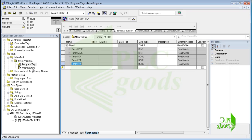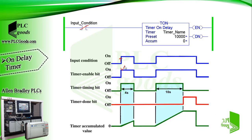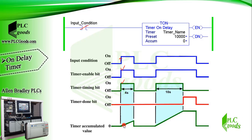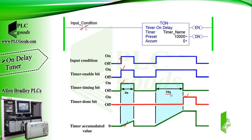The done bit signals the end of the timing process by changing states from false to true. This diagram shows how the on delay timer works: when the rung input logic is true, the enable bit is true, the timer starts its work, the timer timing bit is true, and the accumulated value starts incrementing based on milliseconds. When its value reaches the preset value, the timer done bit will change from 0 to 1.